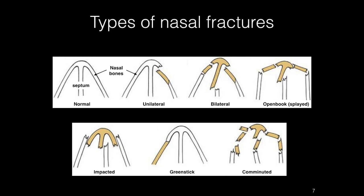There is no standardized worldwide accepted classification system for nasal fractures. The fracture type depends on the patient's individual anatomy and trauma etiology. There can be a unilateral fracture where just one bone fractures, bilateral where both nasal bones fracture, and this can also include fracture of the septum. Bilateral fractures can be of the open book type where the nose splays out, or the impacted type where the dislodged bones telescope and become depressed. Greenstick fractures tend to occur in children before skeletal maturity, and comminuted fractures — where the bones shatter — are much more common in adults.